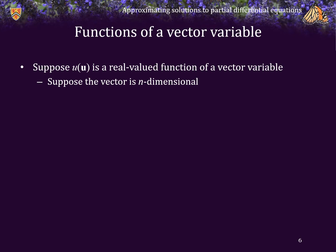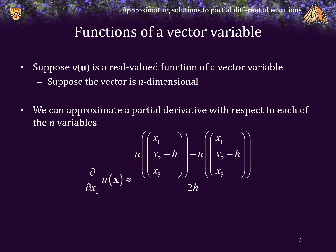For a function of n variables, an alternative notation is to write u as a function of a vector variable x, assumed to be n-dimensional. In this case we can approximate the partial derivative with respect to, for example, the second variable: x1 and x3 are held constant, while for x2 we calculate the function at x2 + h and the function at x2 − h, all over 2h. This is our approximation of the partial derivative with respect to the second variable.